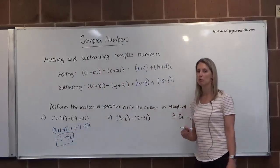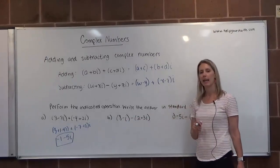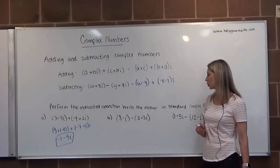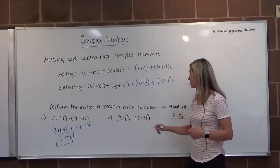In our second example, we're going to subtract two complex numbers. The first number is 8 minus I and the second number, the one that's being subtracted, is 2 plus 3I.